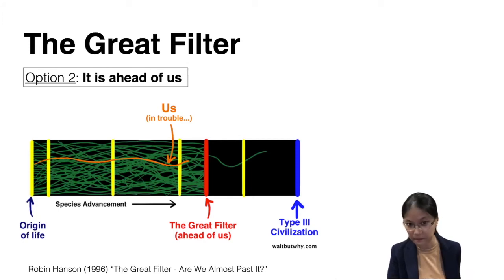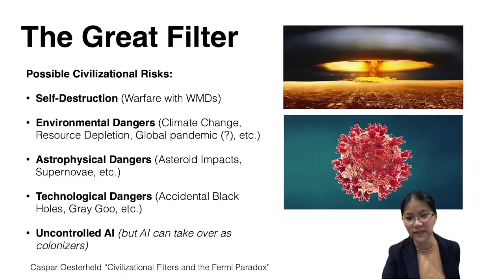So this idea was put forward by Robin Hanson in this 1996 paper, and it brings us back to a reflection of our own civilization. And if it's something that's still ahead of us, these are what could be possible, what we would call civilizational risks or events and issues that can affect the future of the whole civilization.